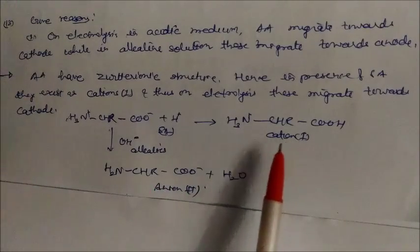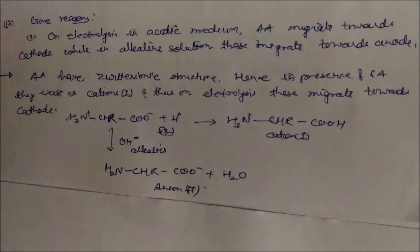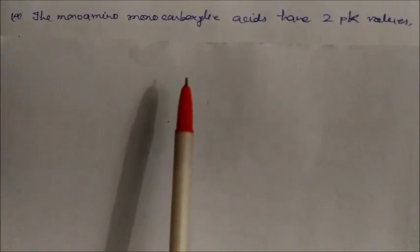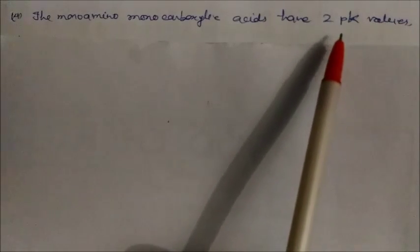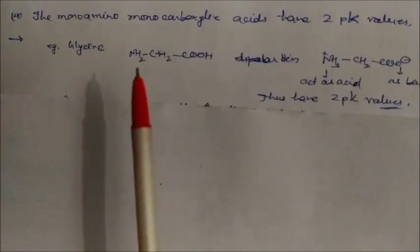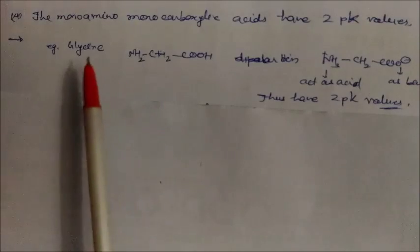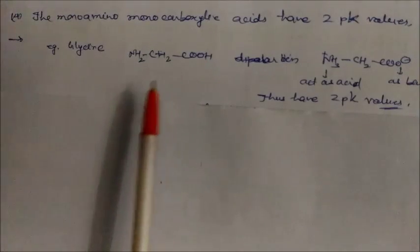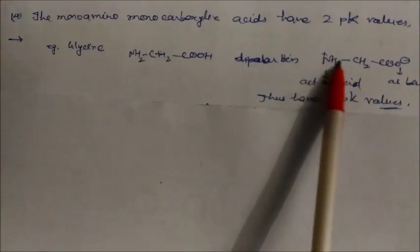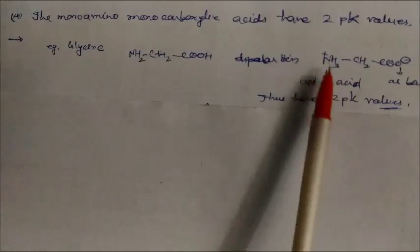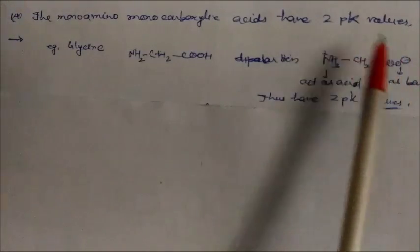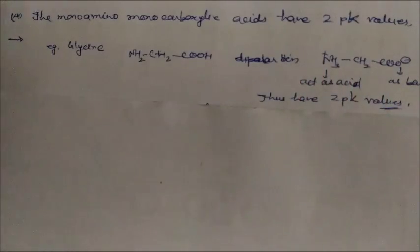Monoamino monocarboxylic acids have 2 pKa values because they are dipolar ions. Taking glycine as an example: in aqueous solution it exists as a dipolar ion where NH₃⁺ acts as an acid and COO⁻ acts as a base. This dipolar nature gives it 2 pKa values.